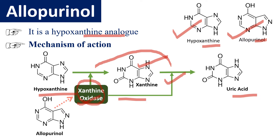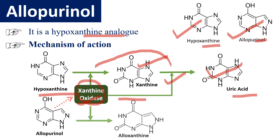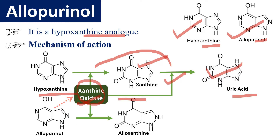When allopurinol is given, it inhibits the enzyme xanthine oxidase, due to which xanthine is not formed and therefore uric acid is also not formed. Allopurinol is converted into alloxanthine, which is a metabolite of allopurinol. This metabolite also inhibits xanthine oxidase. Overall, allopurinol and its metabolite alloxanthine both inhibit xanthine oxidase.